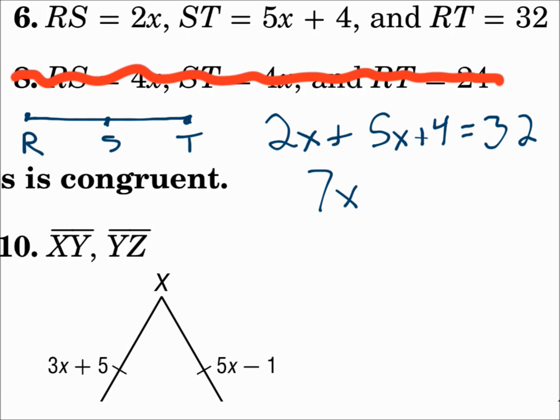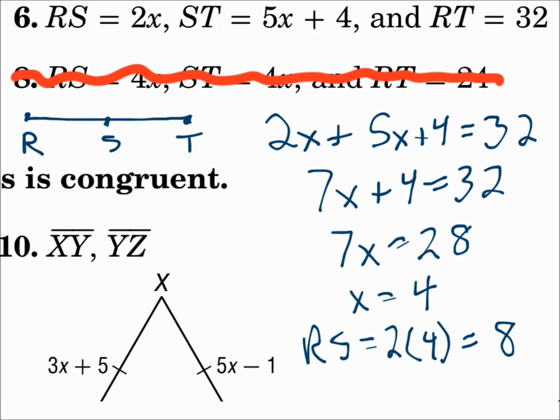Make your equation. Combine your like terms. Subtract 4 from both sides, and divide by 7, and X is 4. RS is 2X, which is 2 times 4, which is 8.